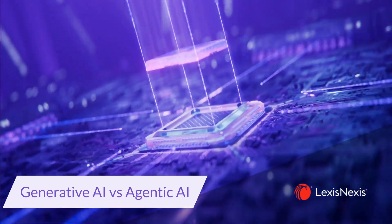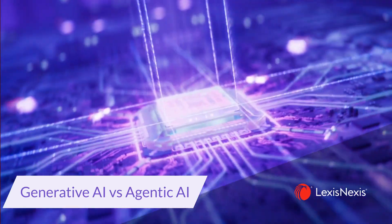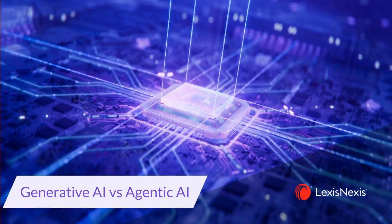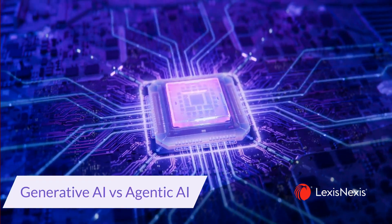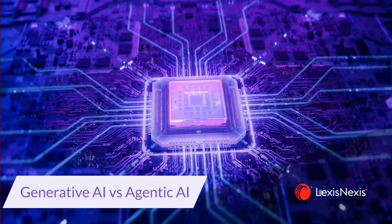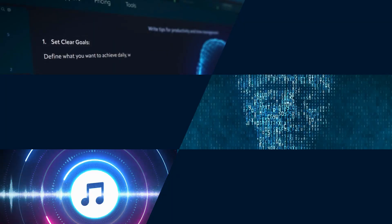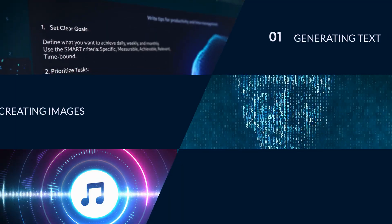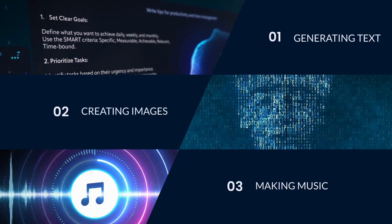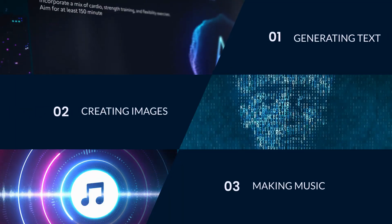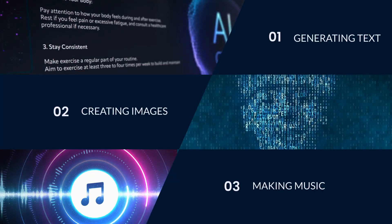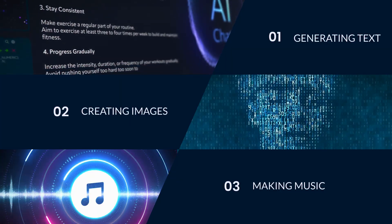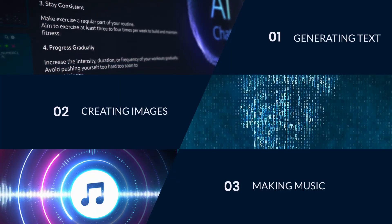Welcome to the world of AI. Let's dive into two fascinating types: generative AI and agentic AI. Generative AI creates new content like text, images, and music by recognizing patterns in existing data. It's perfect for language models like ChatGPT and image synthesis tools like DALL-E.